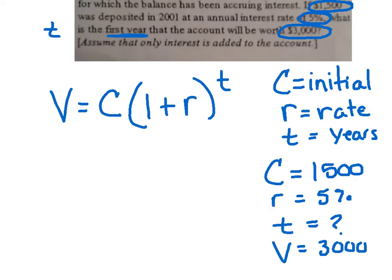5% would be awesome. And their question is, when, in what year will you have $3,000? So basically at this point, I'm just going to substitute in everything I know. So in place of V, I'm going to put my $3,000. My initial is $1,500. One plus.